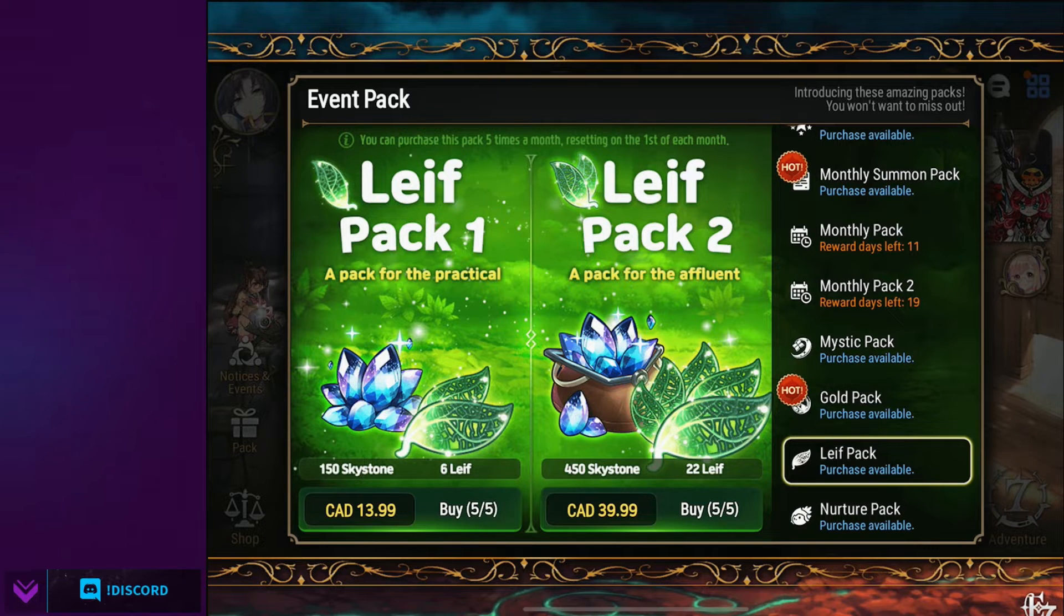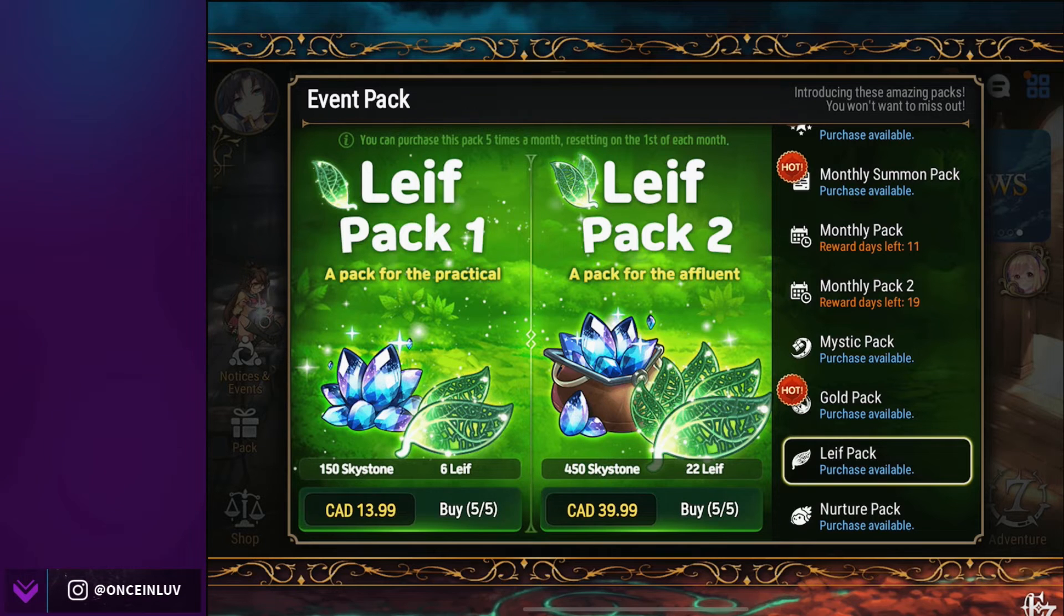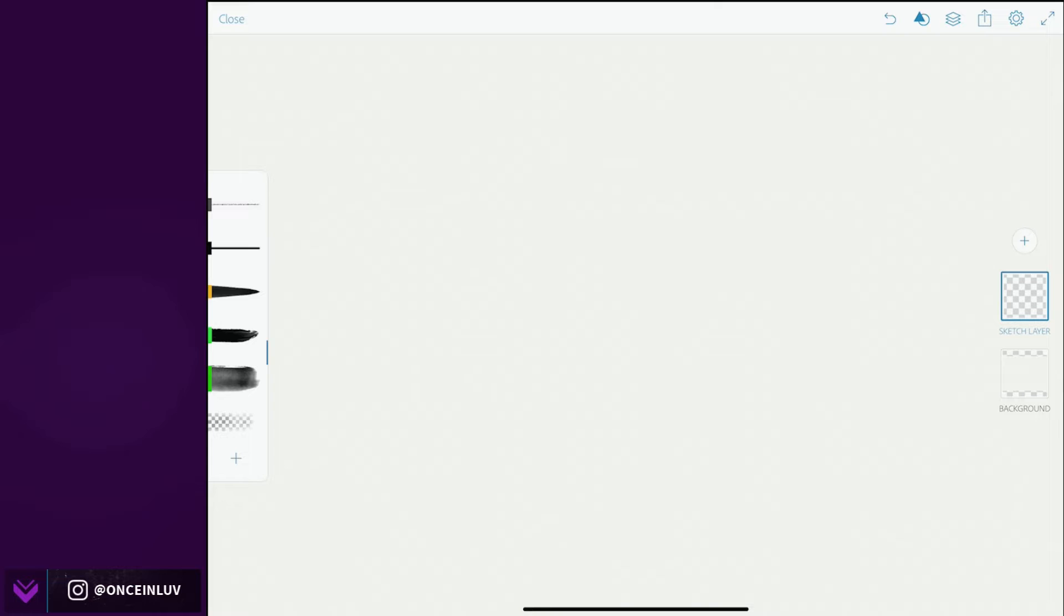So let's look at that. Let's say 450 skystones and 22 leafs for 30. So you have 450 skystones and you get 22 leafs times 40 because that's their skystone value, which will give you 880 skystones basically for 30 dollars.